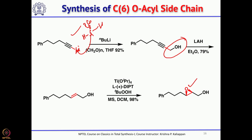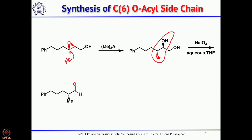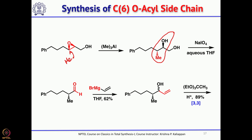The epoxide derived from the Sharpless allylic alcohol epoxidation is easily opened with trimethylaluminium from the opposite face, giving the anti-aldol-type product as a 1,2-diol. The 1,2-diol is cleaved with sodium periodate to give the corresponding aldehyde. Treatment with vinylmagnesium bromide gives the vinyl allylic alcohol, which upon treatment with triethyl orthoacetate with a catalytic amount of acid undergoes the Johnson-Claisen rearrangement to give the gamma-delta unsaturated ester.